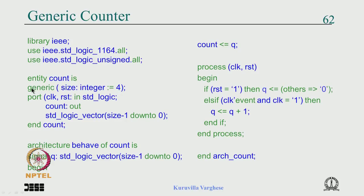Instead of hard-coding the size, define a constant using the 'generic' keyword. In the entity declaration you include a generic clause with, say, 'size : integer := 4' where 4 is the default value. Wherever size is needed you write 'size - 1 downto 0'. This same generic also appears in the component declaration in the package.